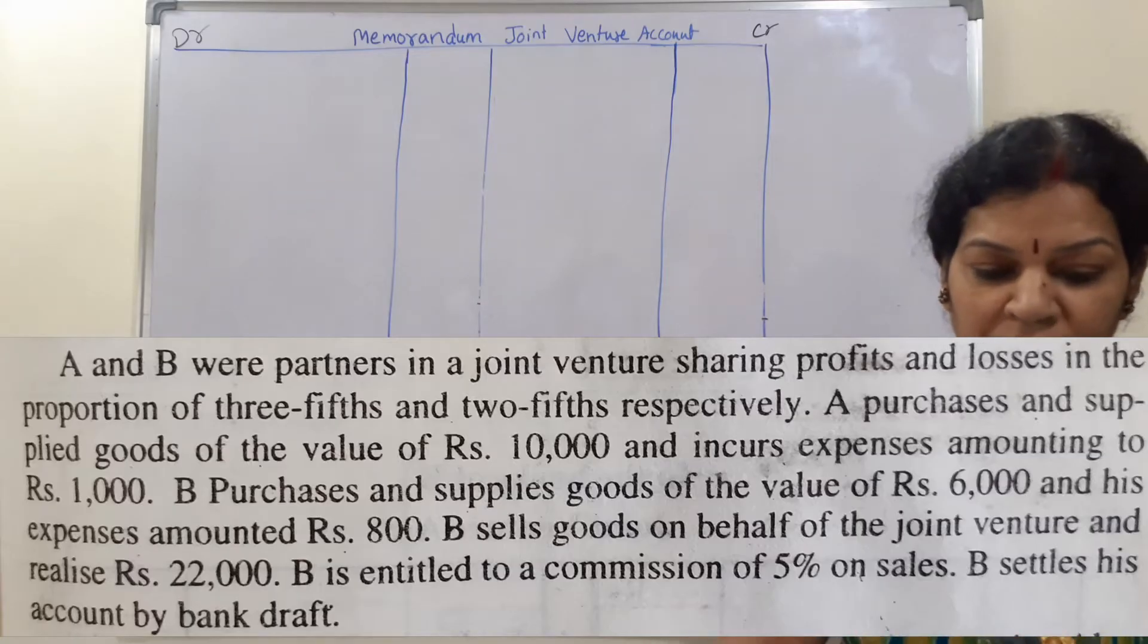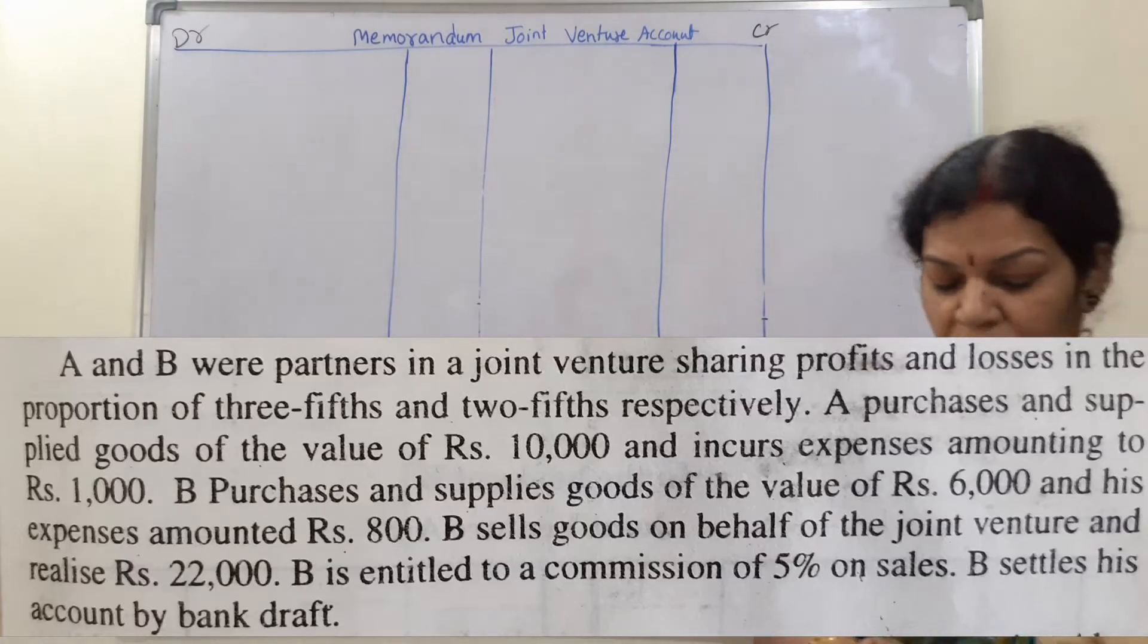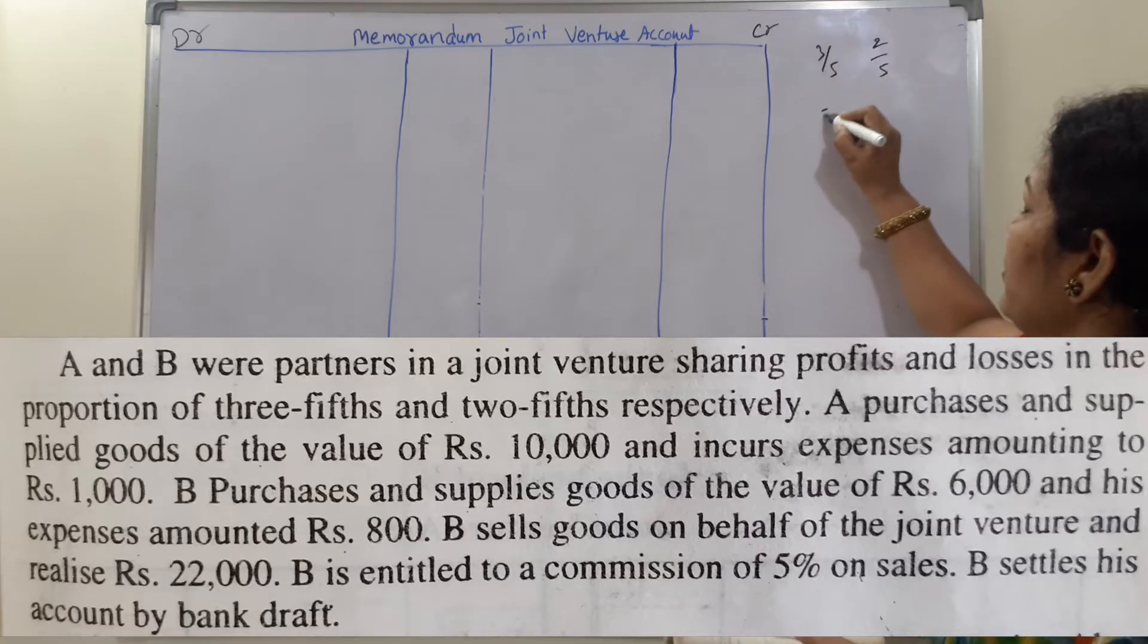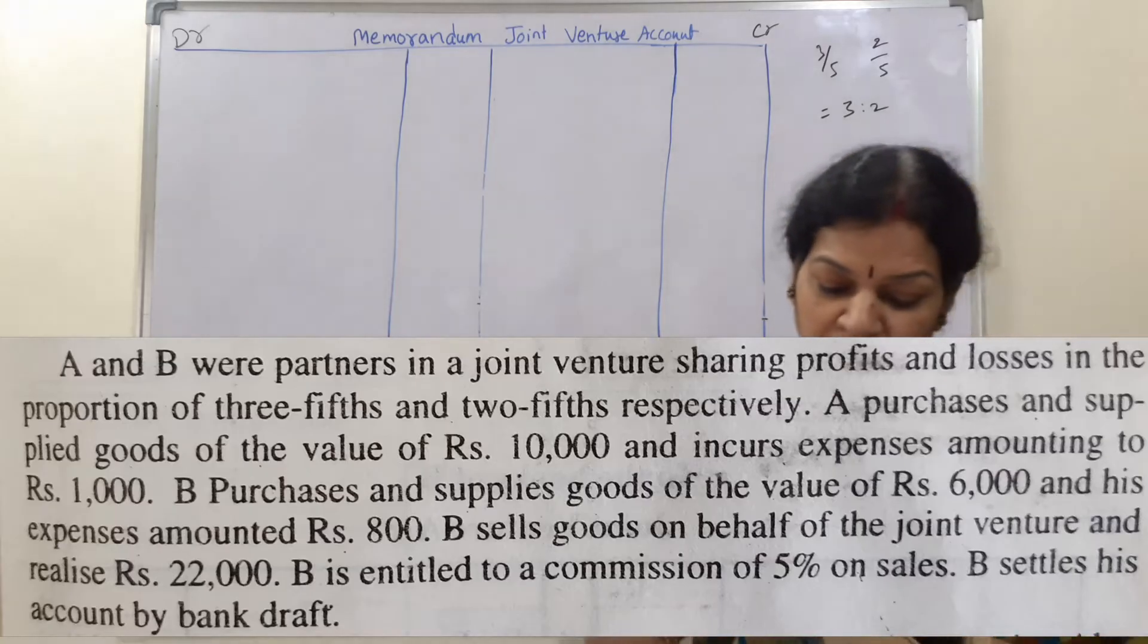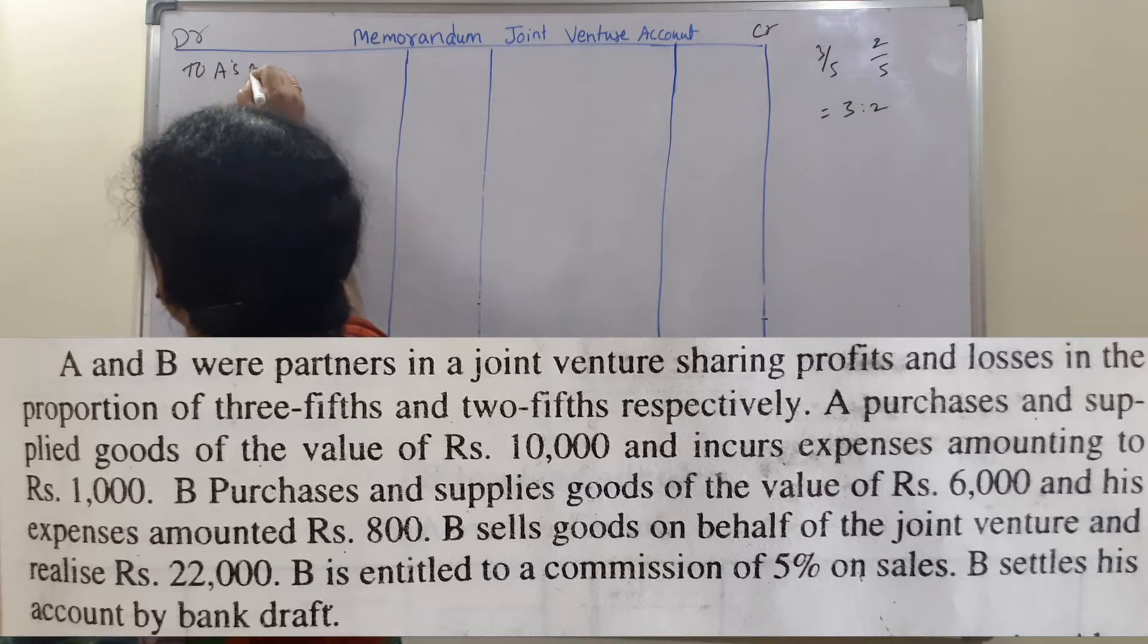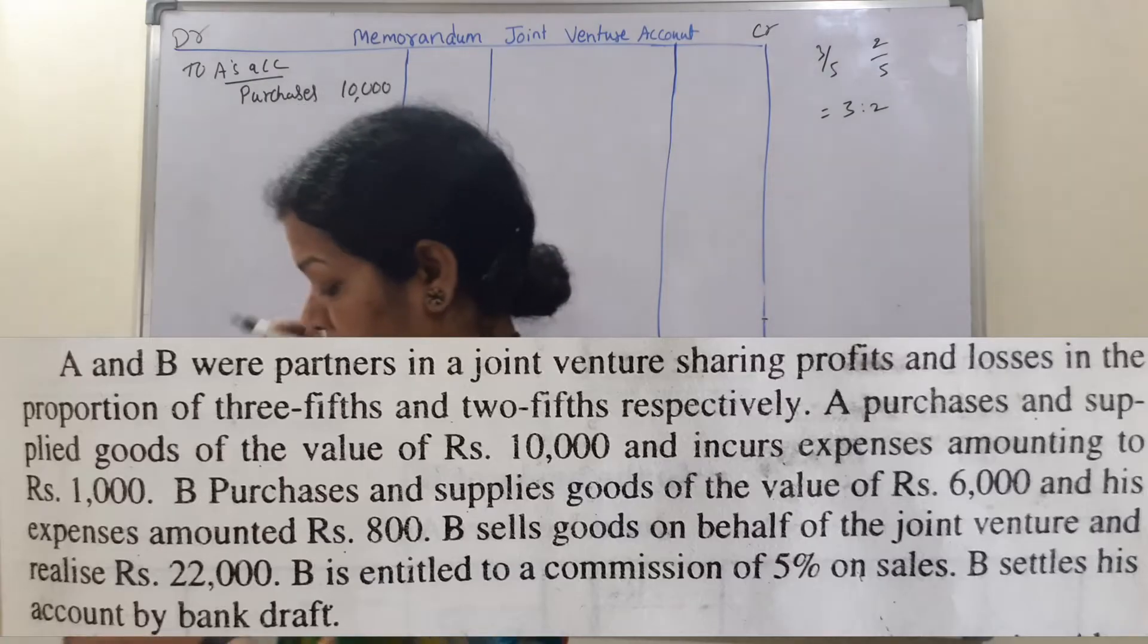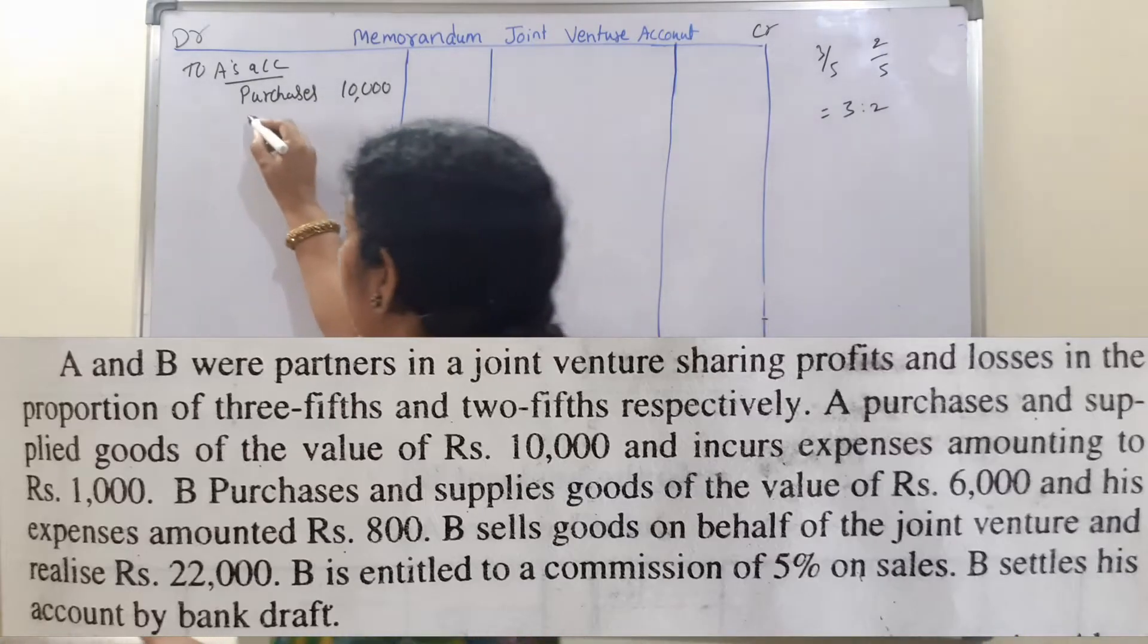First thing is that they are sharing profits and losses in the ratio of 3/5 and 2/5, it means 3 is to 2 ratio. Now coming to the problem, A purchases and supplied the goods value of 10,000. A's all the transactions, you can say A's account. So purchasing, he is purchasing goods worth of 10,000 and incurred expenses amounting 1,000.